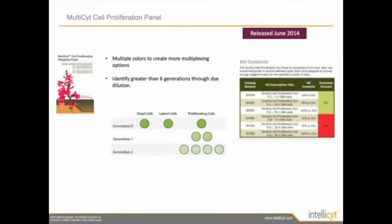One of our newer reagents is the cell proliferation dye, which comes in two different flavors: FL1 and FL4. You can add either one of these dyes to your existing assay. You initially stain your cells in a tube, then wash away any dye that isn't bound to the cell, and seat the cells onto a plate. As the cells divide, the dye gets passed to the next generation at diluted concentration. So as the cells divide, you get a decrease in intensity. You can monitor greater than six generations of cell division.